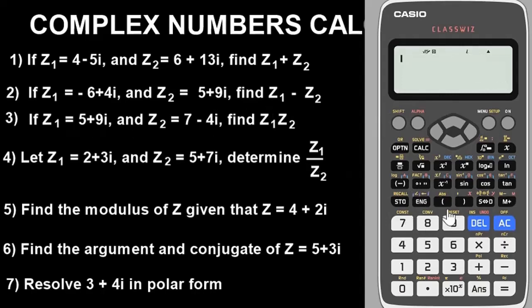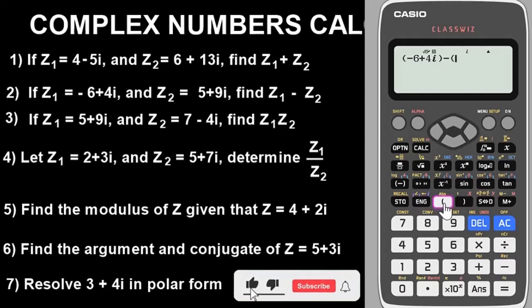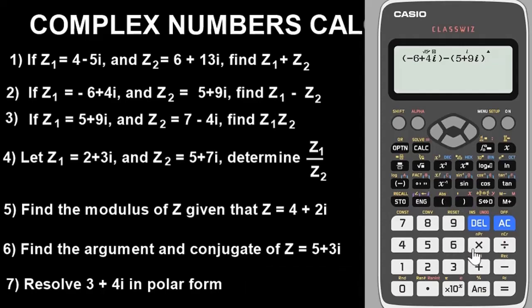Now question two — subtraction. z1 is minus 6 plus 4i; put it in brackets using the ENG button for i, close the brackets, then minus, open brackets for z2 which is 5 plus 9i, close the brackets. Press Equals. The answer is minus 11 minus 5i.